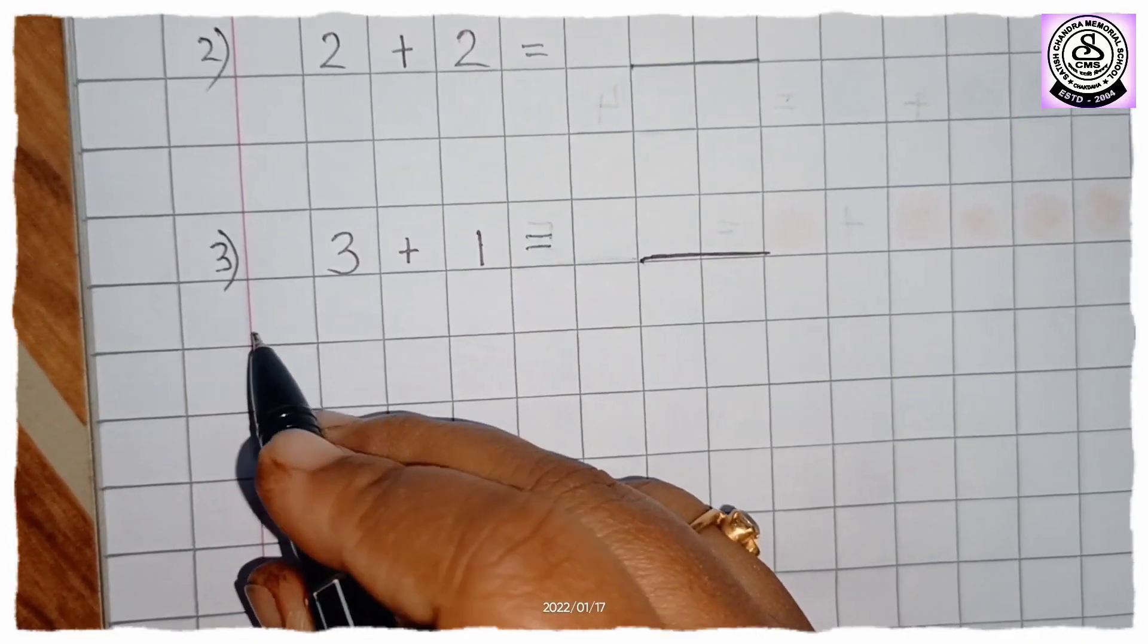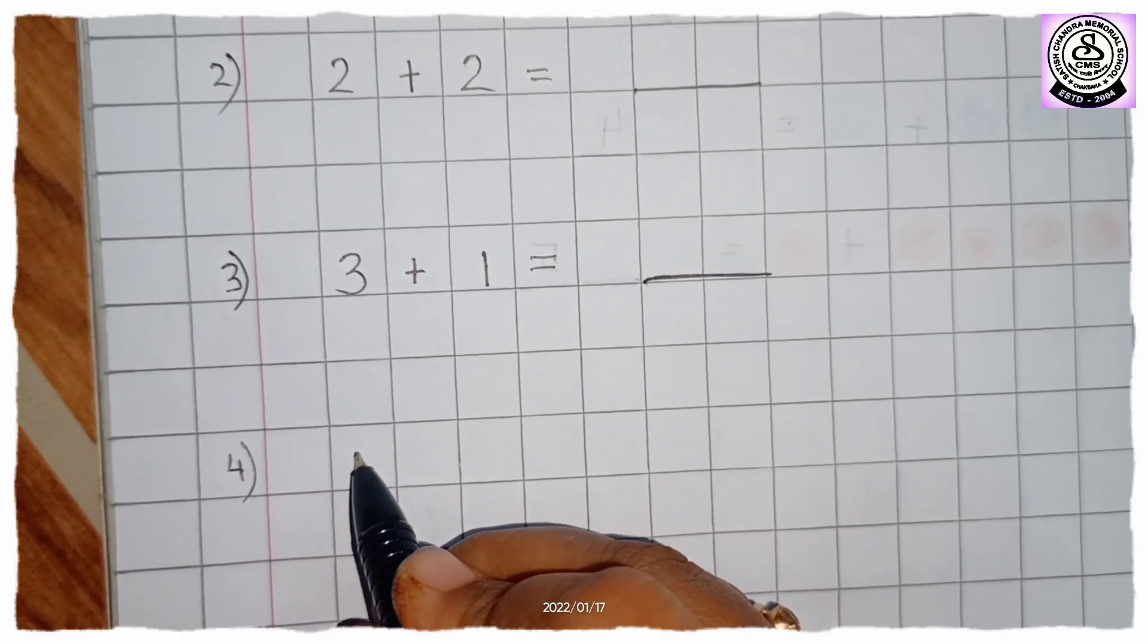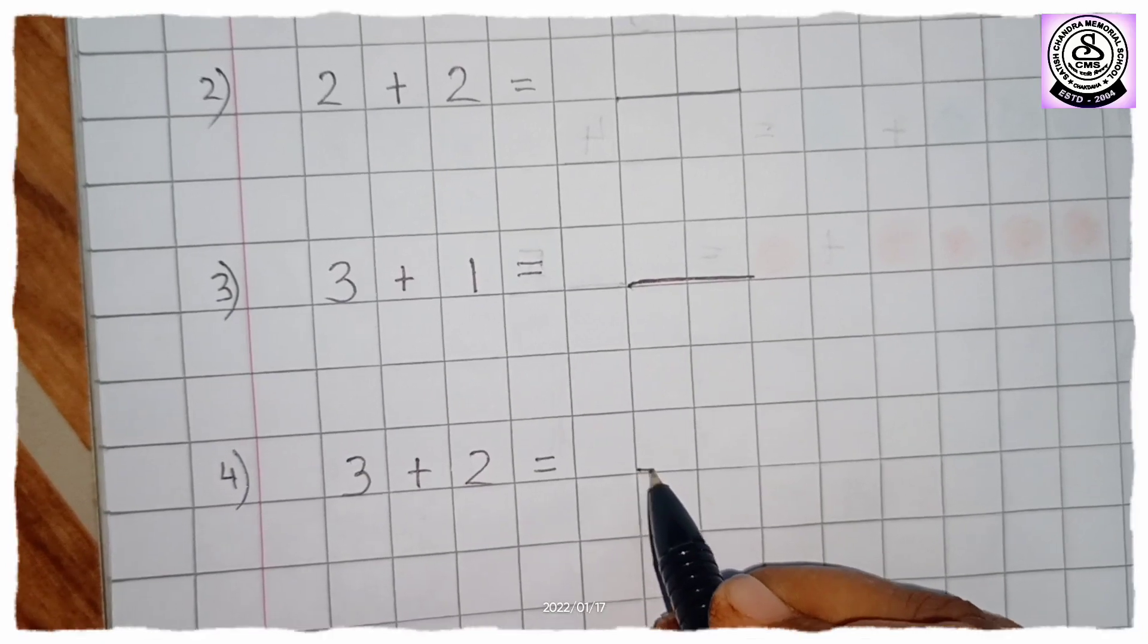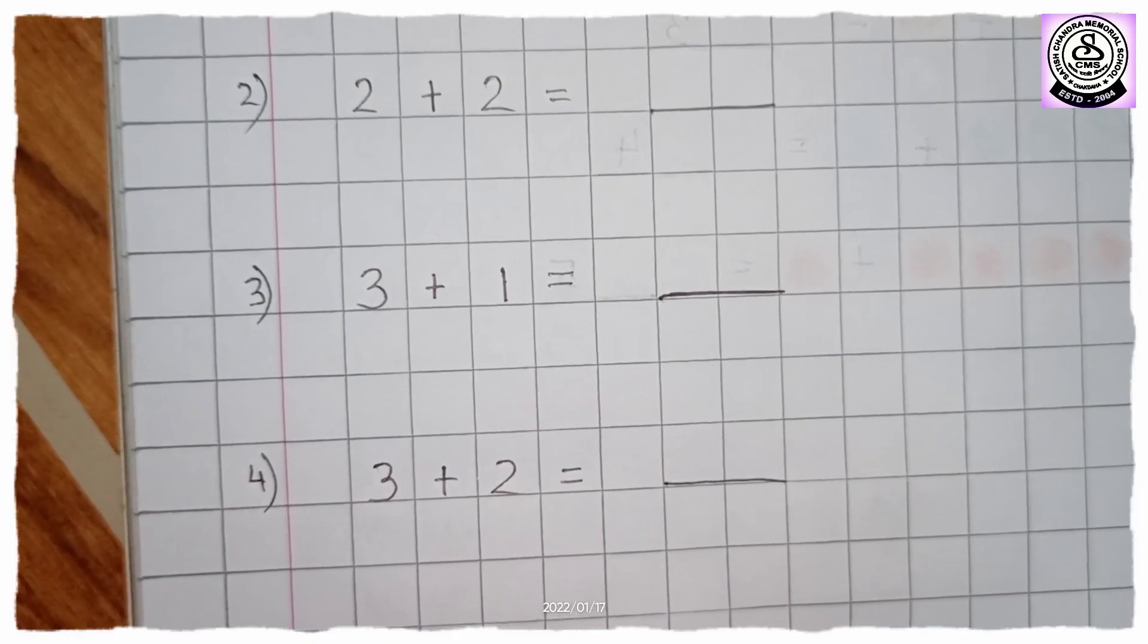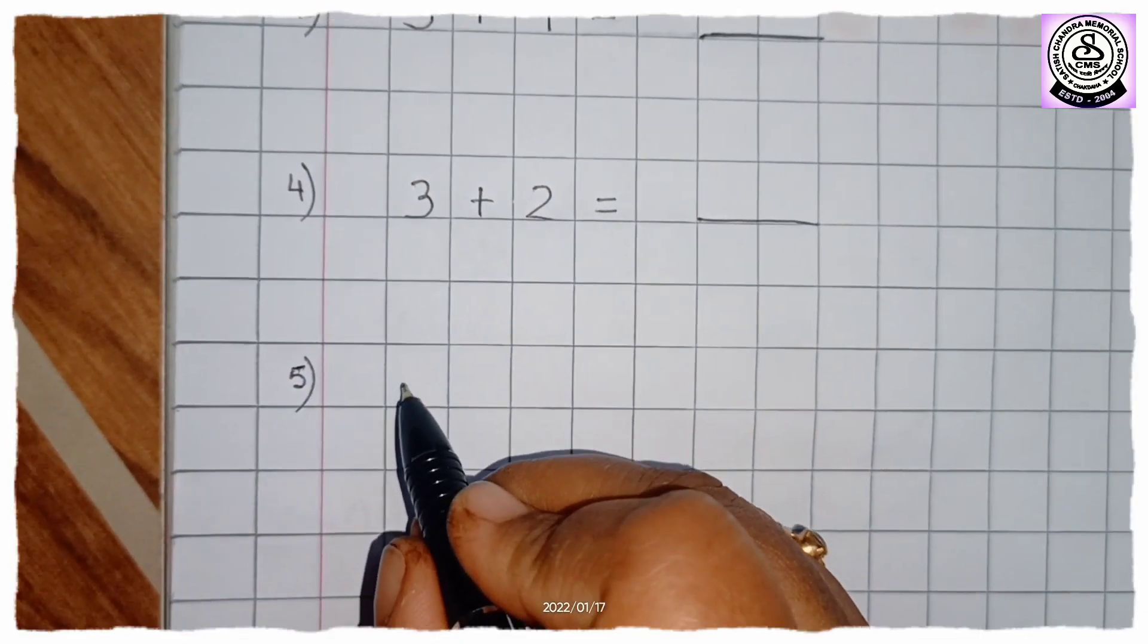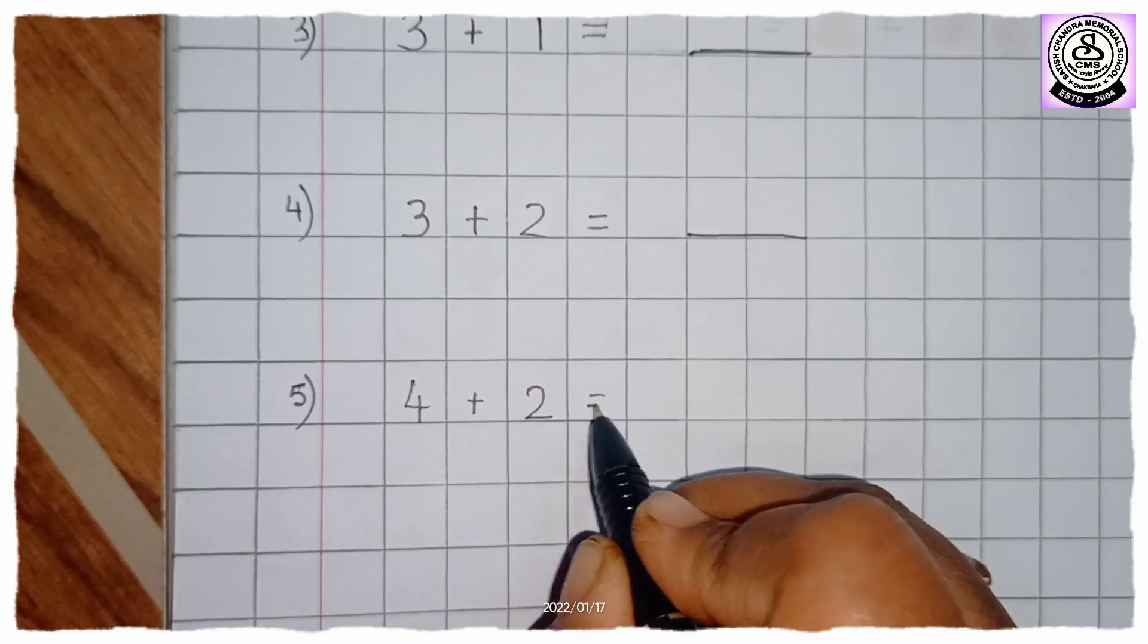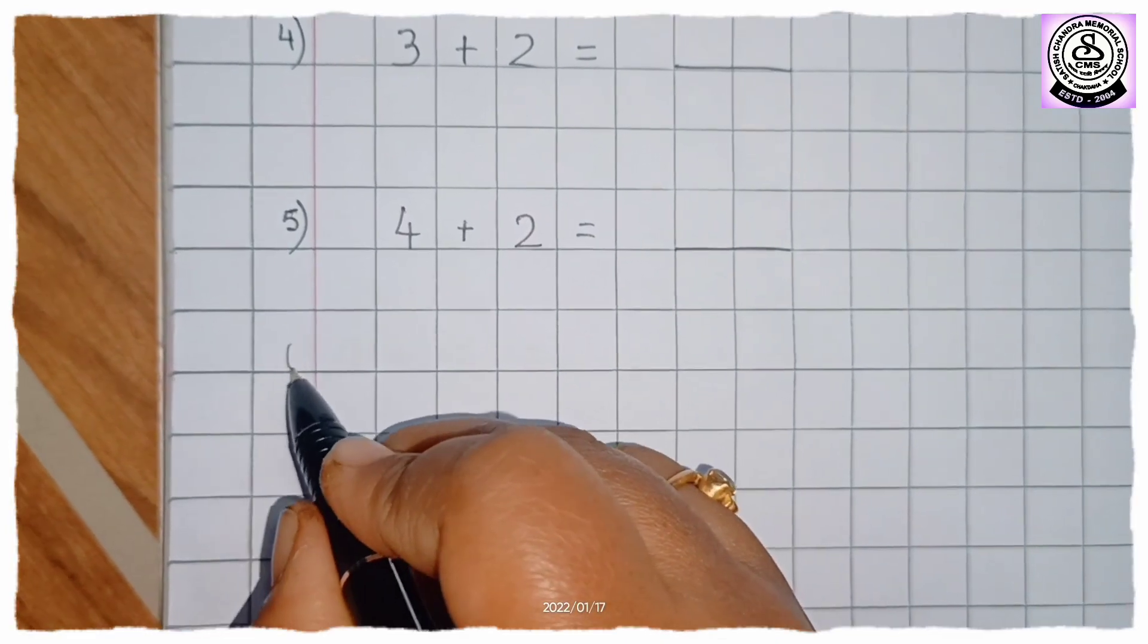Now write here 3 plus 1 is equal to. Leave 1 box and give a dash. Now again question number 4. 3 plus 2 is equal to dash. Leave 2 lines. Now question number 5. Give 4 plus 2 is equal to. Give a dash. Question number 6.